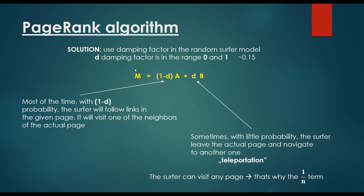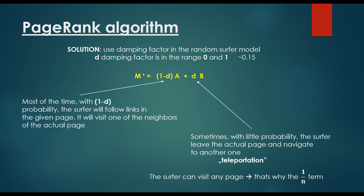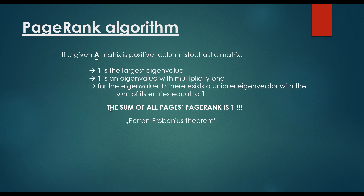The matrix M has the same features as matrix A. If a given A matrix is positive and column stochastic, then 1 is the largest eigenvalue with multiplicity 1, and for eigenvalue 1 there exists a unique eigenvector whose entries sum to 1. M is therefore a positive and column stochastic matrix, and we look for the eigenvector where the eigenvalue equals 1. This means the sum of all pages' PageRank equals 1. This is the Perron-Frobenius theorem, which states that if a matrix is positive and column stochastic, these properties hold. The conclusion is that the sum of all web pages' PageRank equals 1.